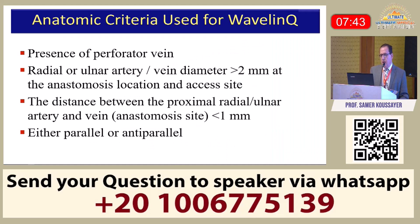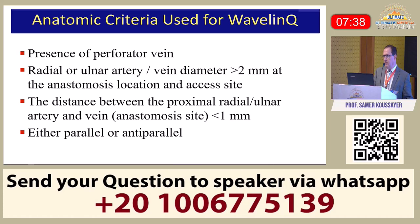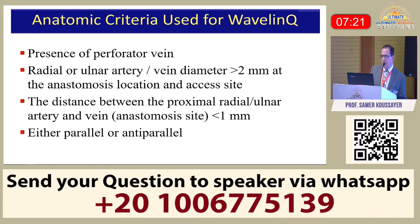Starting with Wavelink: the anatomical criteria require a perforator vein that is patent and more than 2 millimeters. The radial or ulnar artery and vein diameter should also be more than 2 millimeters at the anastomosis location and access site. The distance between the artery and vein at the anastomosis site should be less than 1 millimeter, and you can position them either parallel or antiparallel.